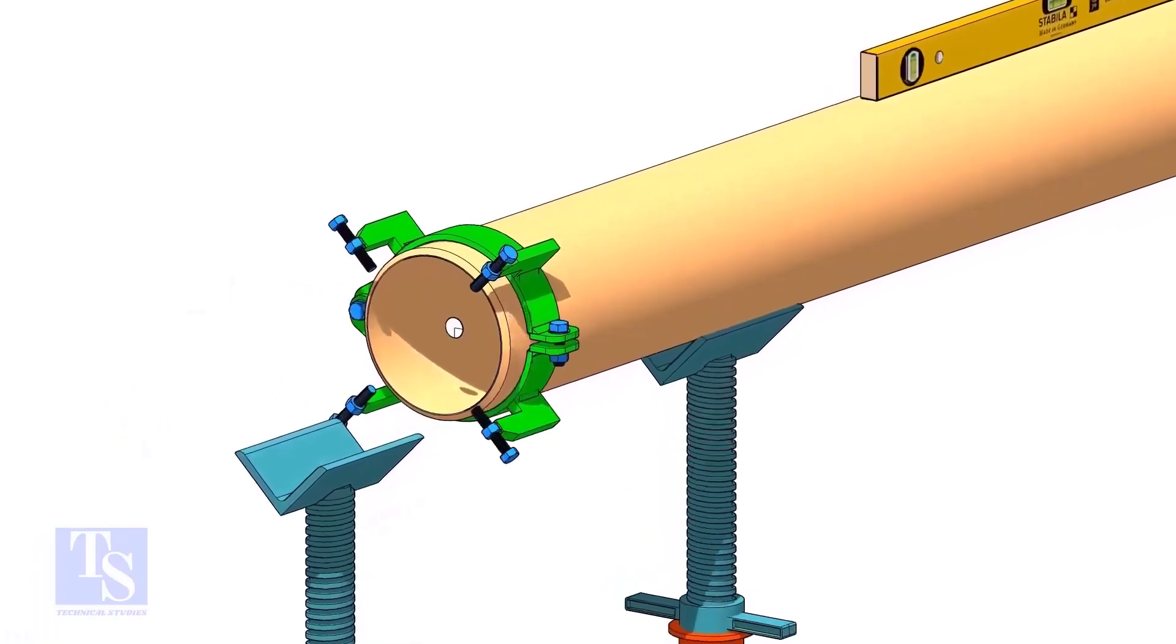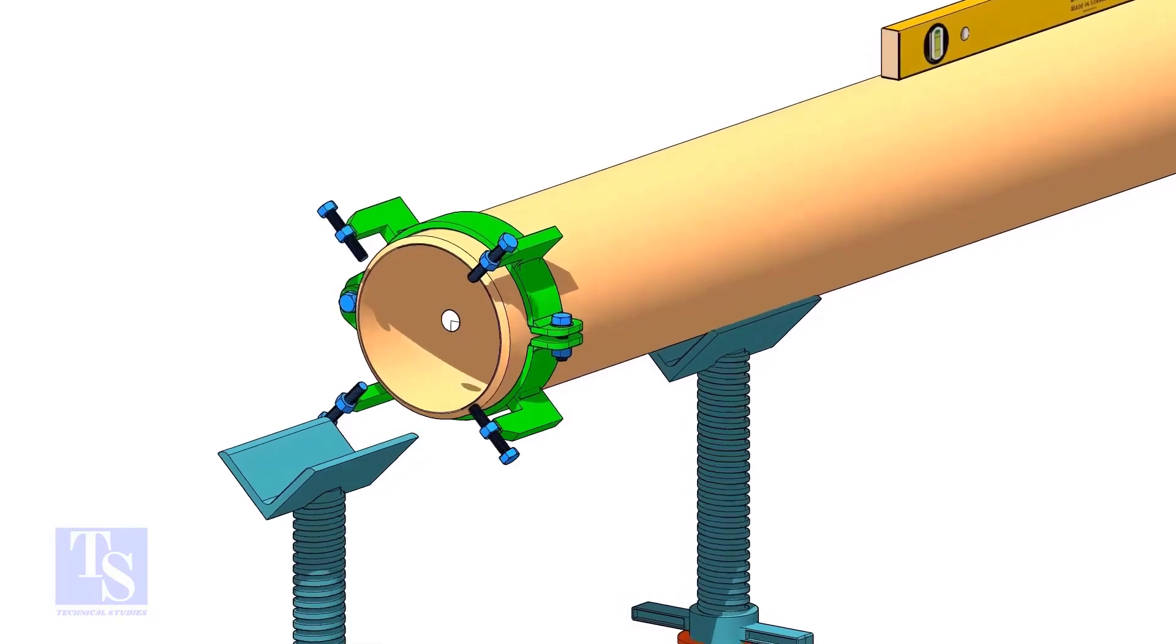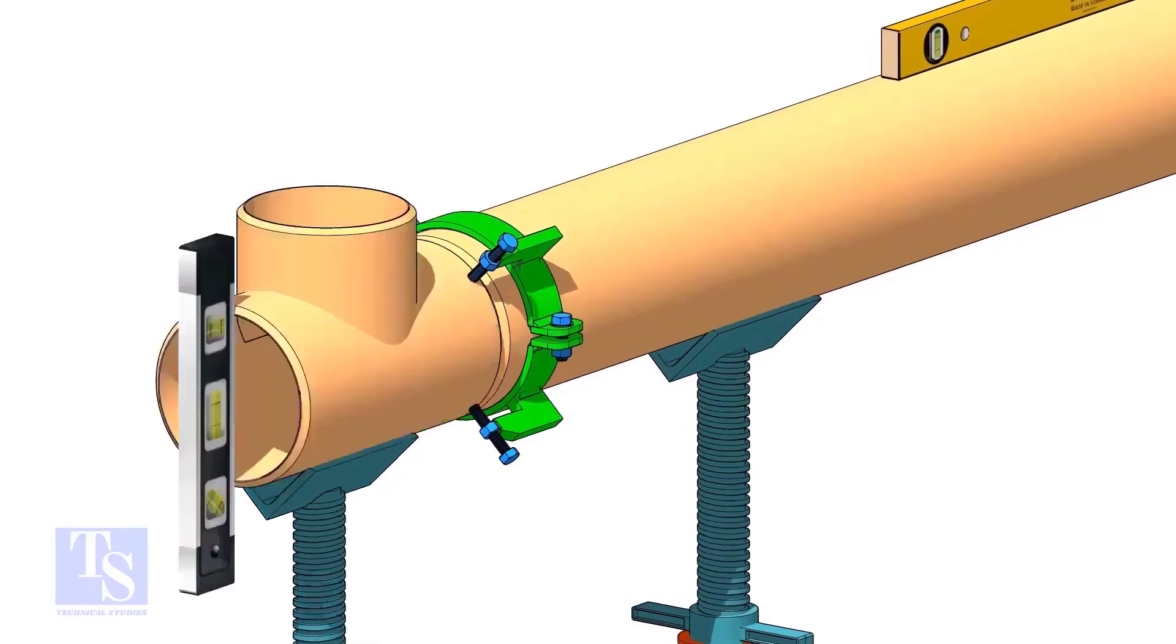Put the clamp, the gap rod, and the T, as shown. Make sure the overlap and the gap are equal around the joint.